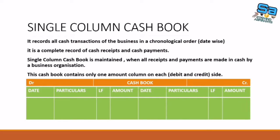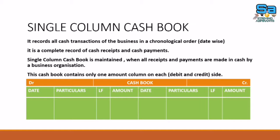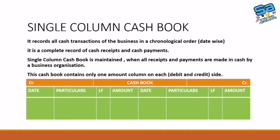The first type is the single column cash book. In the single column cash book, all cash transactions of the business will be recorded in chronological order, or date-wise. The format includes a date column, particulars column for the description of the transaction, ledger folio, and an amount column on the debit side. The credit side similarly has date, particulars, ledger folio, and an amount column.